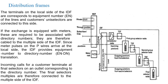The terminals on the local side of the IDF correspond to equipment number N of the lines, and customers' uni-selectors are connected to this side. If the exchange is equipped with meters, these are required to be associated with directory numbers. They are therefore cabled to the multiple side of the IDF, since meter pulses on the P wires arrive at the local side.